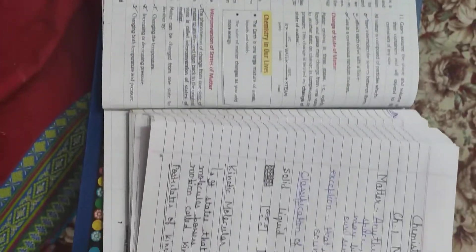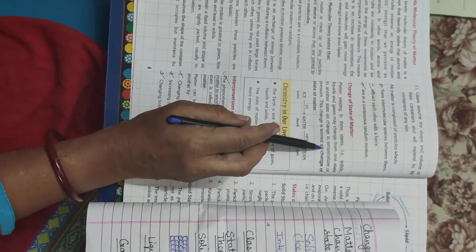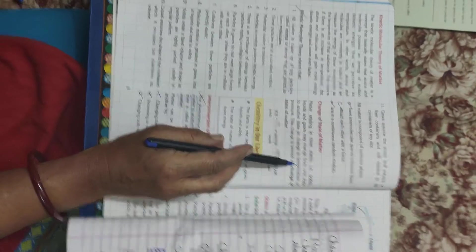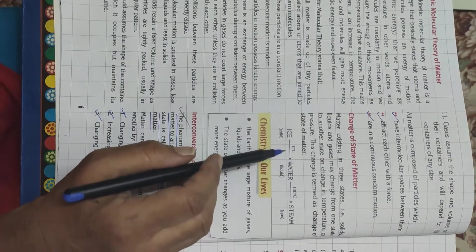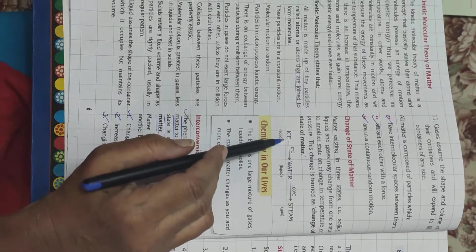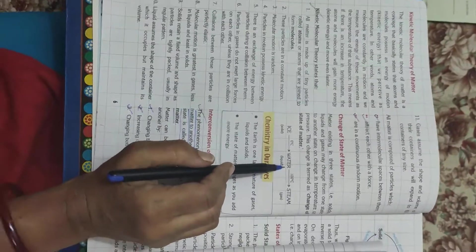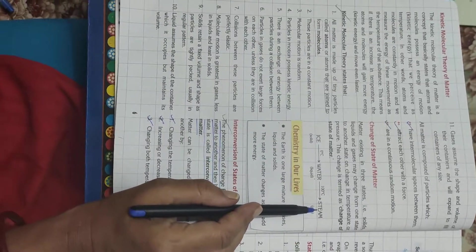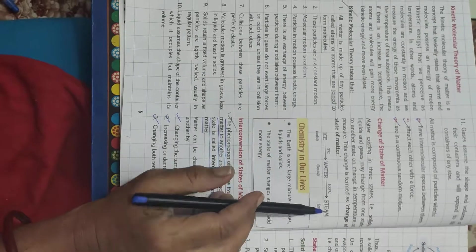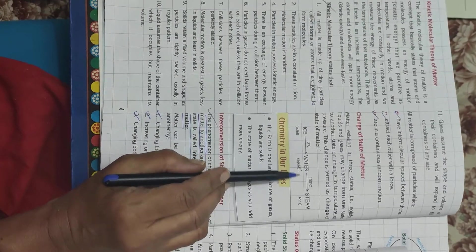Now, come to the second part of the chapter. Changes of state of matter. This is a very common example that you must have observed at home. If you take out ice from the refrigerator, after some time it changes to water. And if it is heated, it changes to steam. So, what do you observe? A same matter changes from solid to liquid and gas.